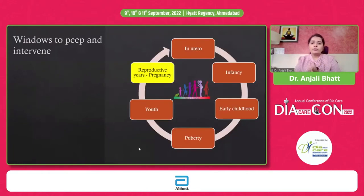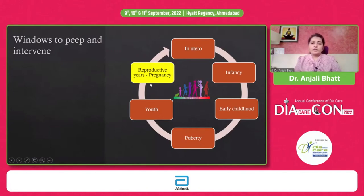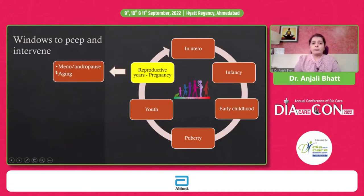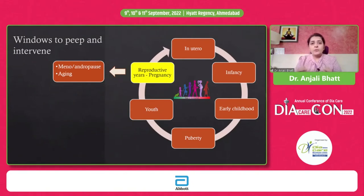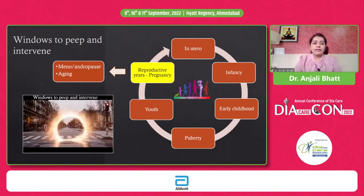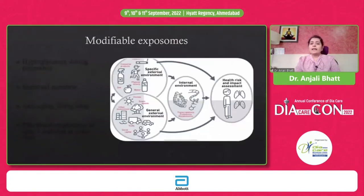There are multiple windows of opportunity to peep in and intervene to modify or influence epigenetic expressions. The life cycle starts from in utero, infancy, early childhood, puberty, youth, reproductive years including pregnancy in women, and then andropause or menopause, and aging. Each of these stages is a window of opportunity to modify how epigenetic changes will decide genetic expression — either favorably or unfavorably. We need to keep looking for windows of opportunity for intervention and changing the path of how genes get expressed in future.